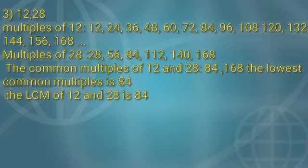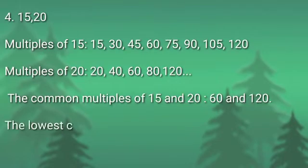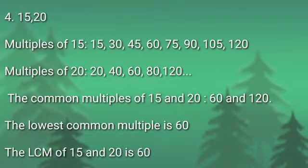Come on, write down fast. Then we will solve the next one. Okay, those who have finished, write down the next question. Next question is 15 and 20. First, we will write down the multiples of 15 and then multiples of 20. The common multiples of 15 and 20, 60 and 120. The lowest common multiple is 60. So, the LCM of 15 and 20 is 60.